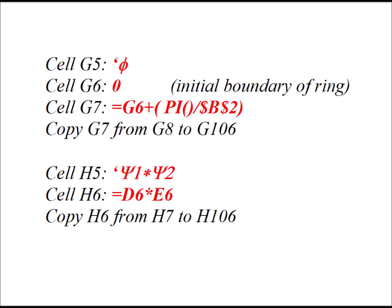Now we would like to be able to visualize that eigenfunctions with different eigenvalues are orthogonal. Type in cell G5 apostrophe φ. In cell G6, we type the number zero. You'll notice that this is repetitious from what we did before. This isn't the most elegant way to do it, but it is the most simple and straightforward. In cell G7, we type the formula equals G6 plus π divided by dollar sign B dollar sign 2. We copy cell G7 from G8 to G106.